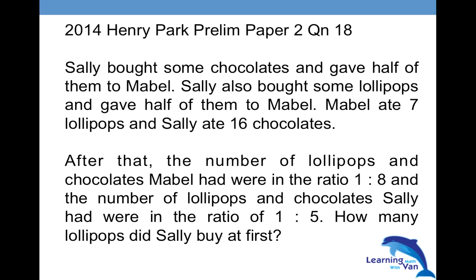Sally bought some chocolates and gave half of them to Mabel. Mabel ate 7 lollipops and Sally ate 16 chocolates. After that, the number of lollipops and chocolates Mabel had were in a ratio of 1 to 8, and the number of lollipops and chocolates Sally had were in a ratio of 1 to 5. So how many lollipops did Sally buy at first?